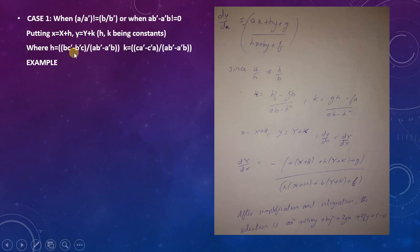h is equal to (bc' - b'c) divided by (ab' - a'b). k is equal to (ca' - c'a) divided by (ab' - a'b).